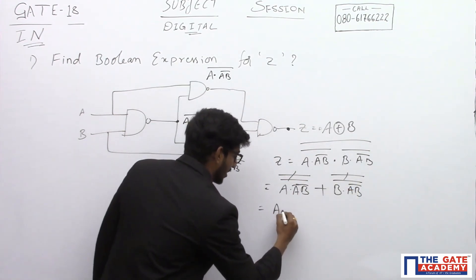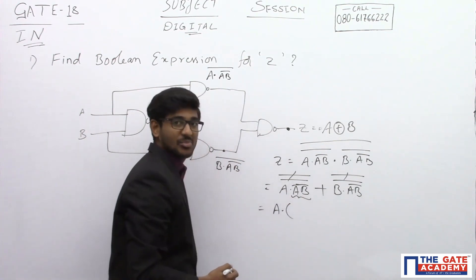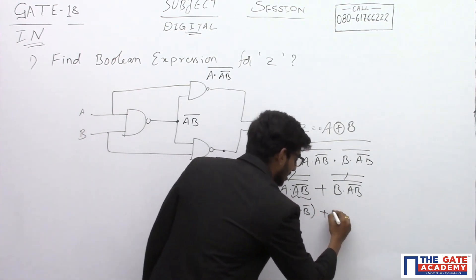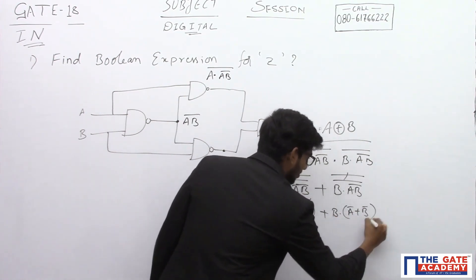Now, we have only, if you split using De Morgan's laws, A bar plus B bar plus B into A bar plus B bar.